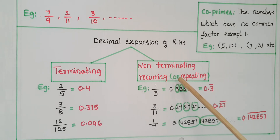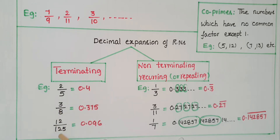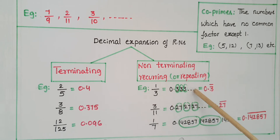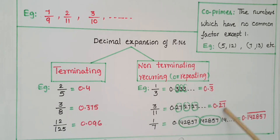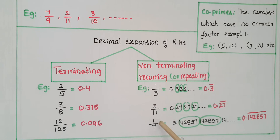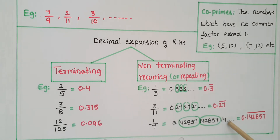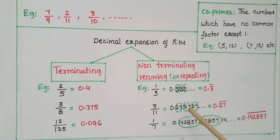For example, two by five is equal to 0.4, three by eight is equal to 0.375, and twelve by one twenty-five is equal to 0.096 — these numbers have terminating decimal expansion. And if you see these numbers: one by three is equal to 0.333... so this number is non-terminating and three is repeating. Three by eleven is equal to 0.272727..., which we can write as 0.27 bar — also non-terminating repeating. And one by seven is equal to 0.142857... also non-terminating repeating.